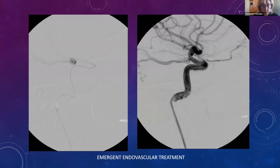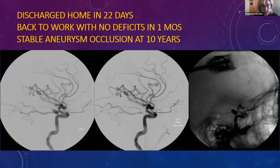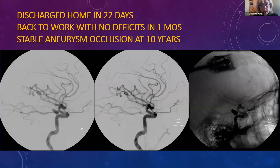We got the microcatheter up into the aneurysm quickly, always testing to make sure no normal vessels come off the dome. We placed about six coils with very good aneurysm occlusion. The lateral view with the native images shows the coils within the aneurysm. She was discharged at 22 days, back to work without a deficit at one month, and came back for follow-up at 10 years with no recurrence.